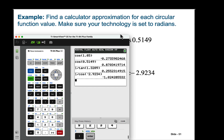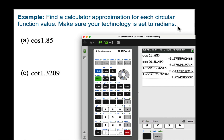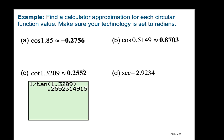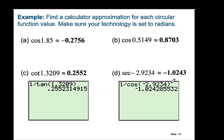I'm going to close the calculator now, and put those answers up — showing how we typed in 1 over tangent for cotangent, and 1 over cosine for secant.